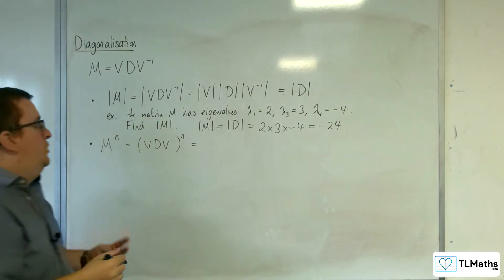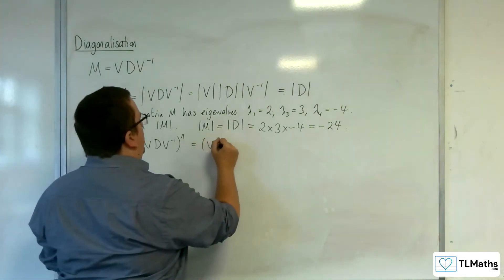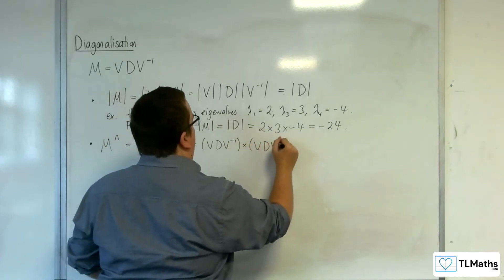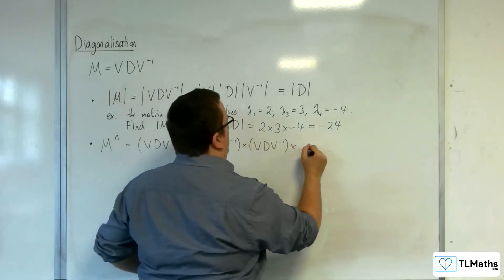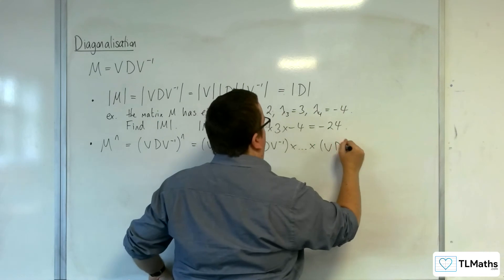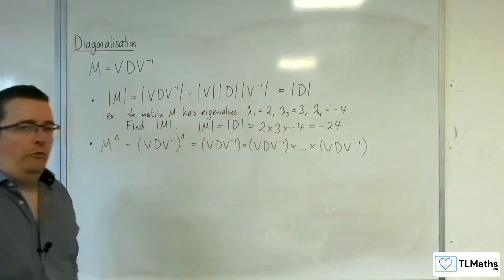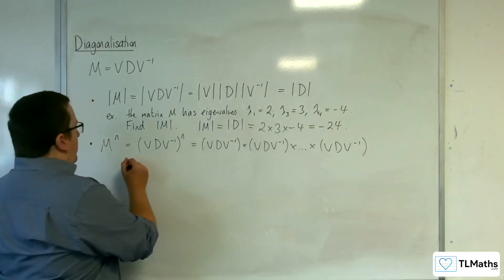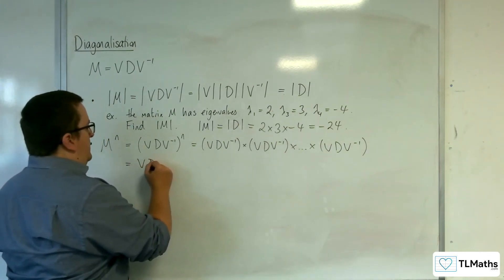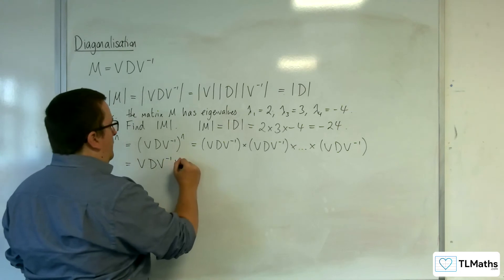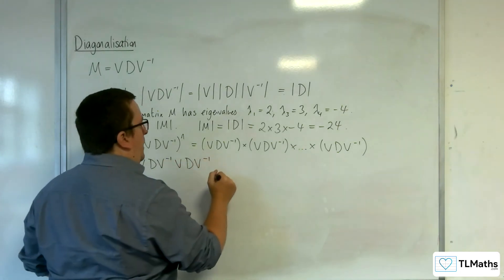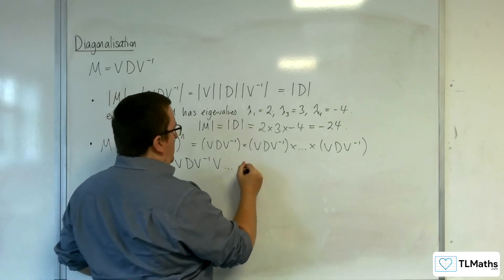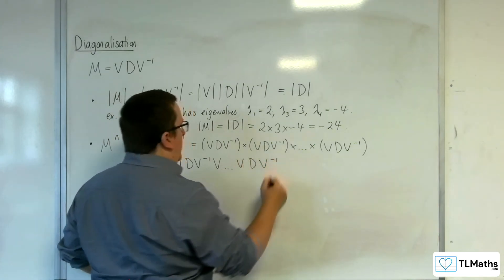Which is V D V minus 1 times by V D V minus 1 times by dot dot dot V D V minus 1. So N times. So what you've got there is V D V minus 1, V D V minus 1, V D V minus 1, then V D V minus 1.